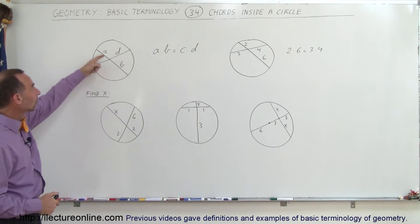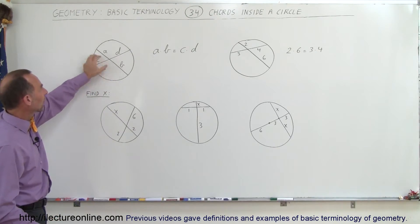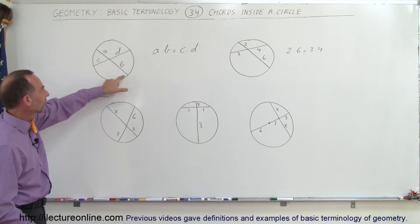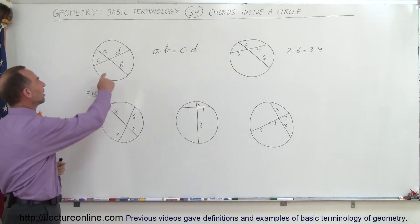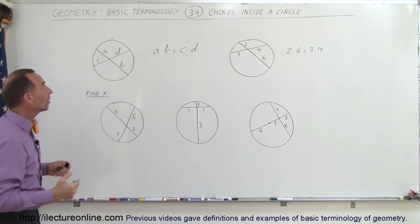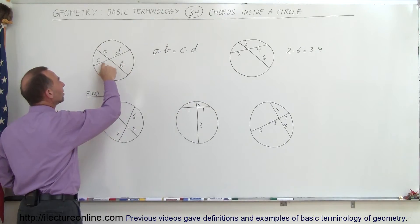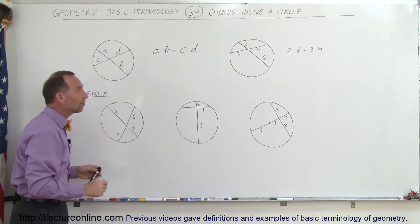So here we have two chords running through the circle from one end to the other. Let's say the length from there to where they cross is A, the length from where they cross to the edge of the circle is B. The same with the second chord, this length is C and that length is D. The rule says that the product of A times B is equal to C times D.